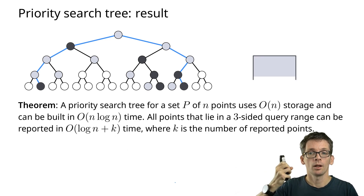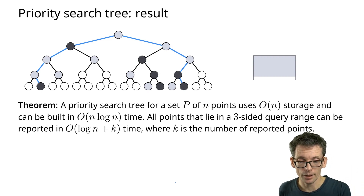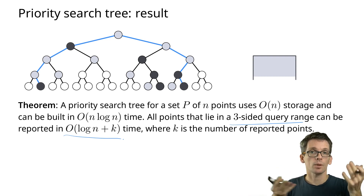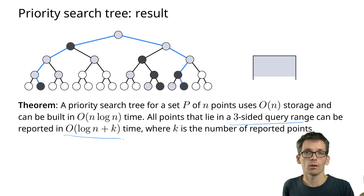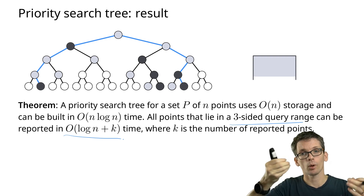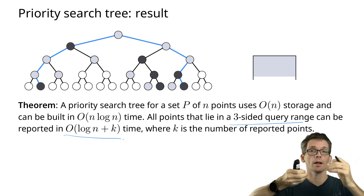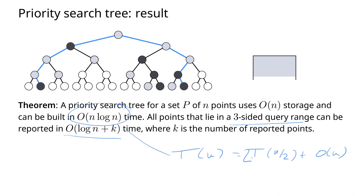To summarize: with a priority search tree on a set of n points, I can answer three-sided range queries in O(log n + k) time, with linear storage, and construction in O(n log n) time. Finding the minimum x-coordinate and the median each take linear time, and the standard recurrence — the same as for merge sort — solves to O(n log n).